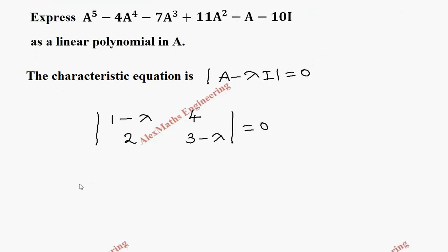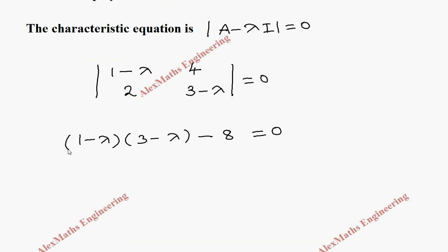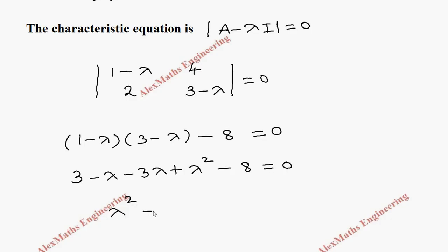I want to expand this determinant. So 1 minus lambda into 3 minus lambda minus 4 times 2 equal to 0. We expand this expression: 3 minus lambda, then minus lambda multiplied gives minus 3 lambda plus lambda squared minus 8 equal to 0. By rearranging, we get lambda squared minus 4 lambda minus 5 equal to 0.